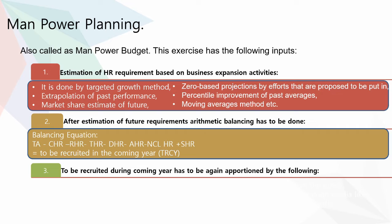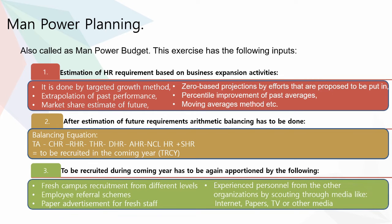The third input is that the number to be recruited during the coming year has to be apportioned by the following: fresh campus recruitment from different levels, employee referral schemes, paper advertisement for fresh staff, and experienced personnel from other organizations sourced through media like internet, paper, TV, or other media.